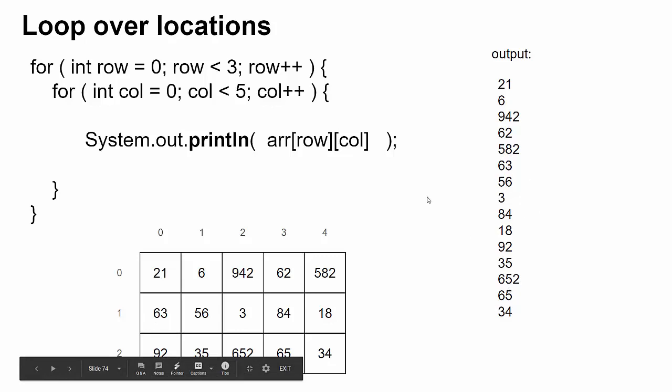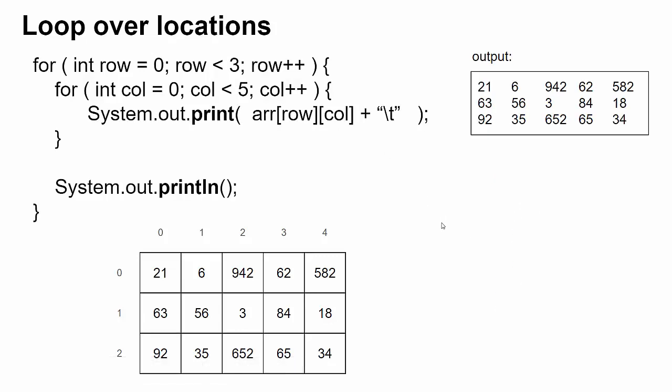A more conventional pattern would be this. Inside here, instead of saying println, we'll just say print. So that way, each number we print, we won't have the output go to the new line. And then I think we'll display a tab after each one, so that you have a big space between each number we print.